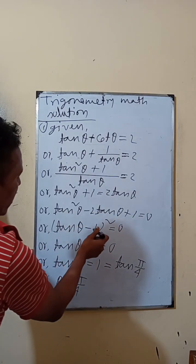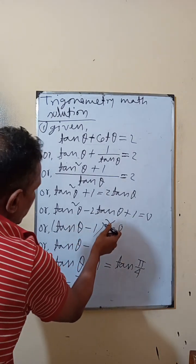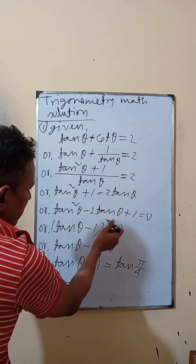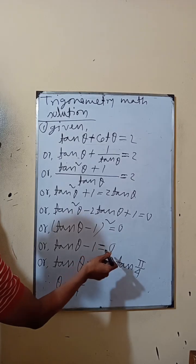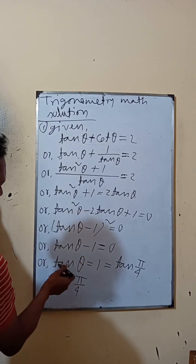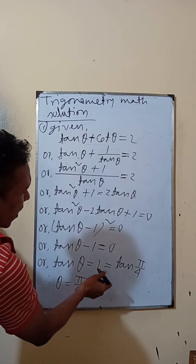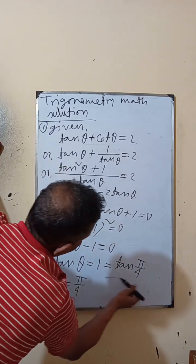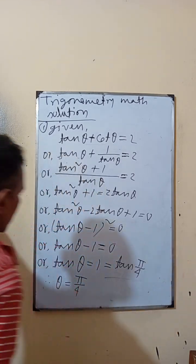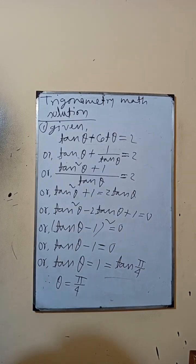10g1 is equal to the whole square, is equal to 0. 10g1 is equal to 0. That is equal to 1. 1 is equal to 10, 5 by 4. 3 is equal to 5 by 4.